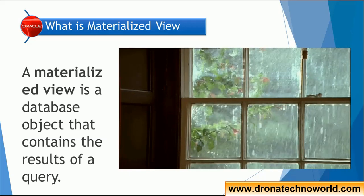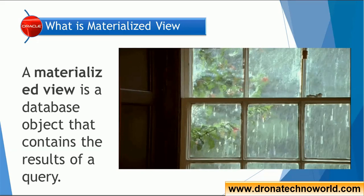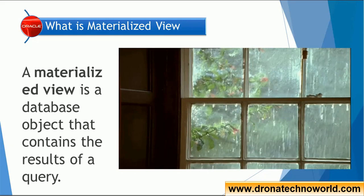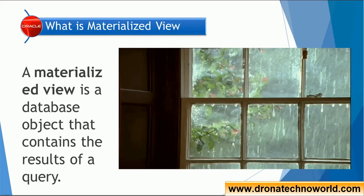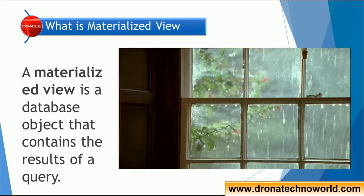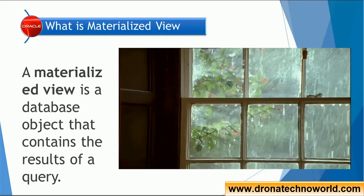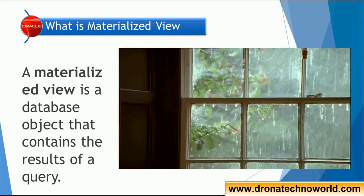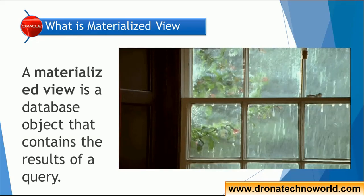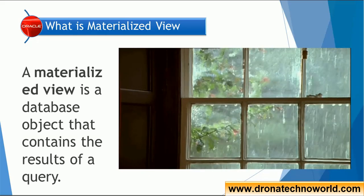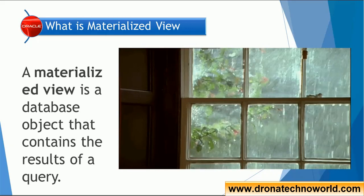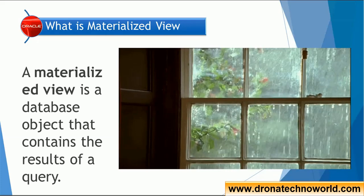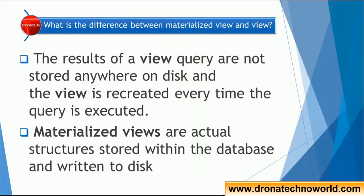A materialized view is a physical table — it is a database object. The normal view we create on a table is not stored on disk, meaning the information in the view is just a SELECT query kept in memory, not on disk. That is the basic concept: a materialized view fetches the result from the given table and stores it in the form of another table.